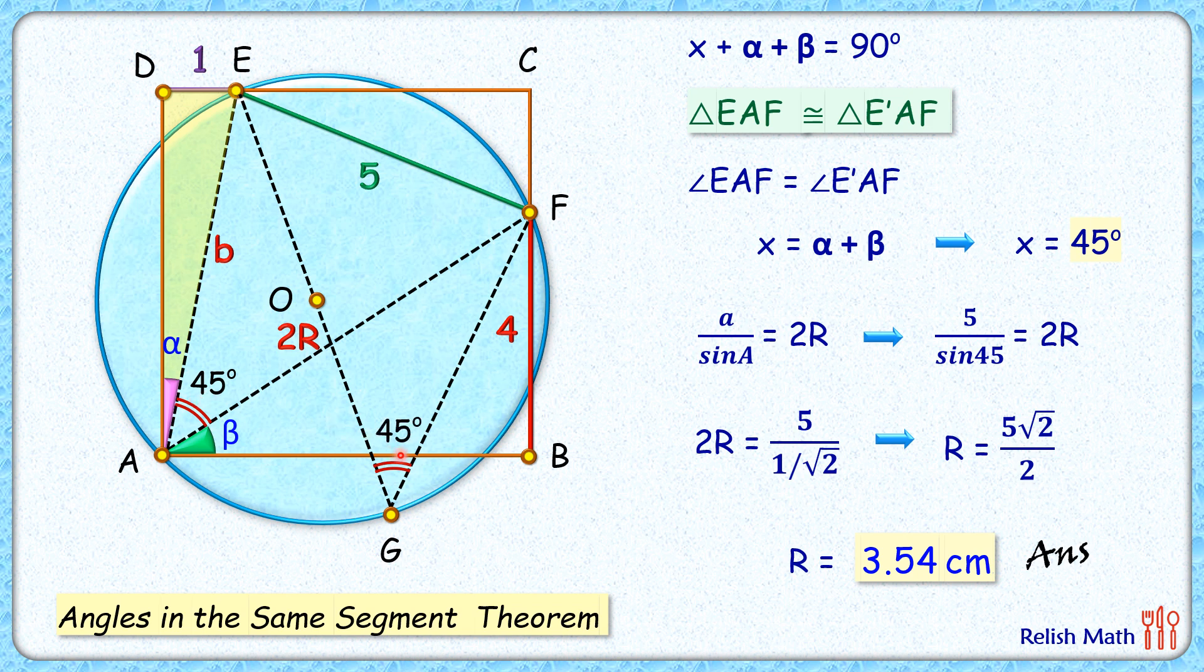Now, EG is the diameter, thus angle F will be 90 degrees. In this blue triangle, sin(45°) = 5/(2R), perpendicular upon hypotenuse.